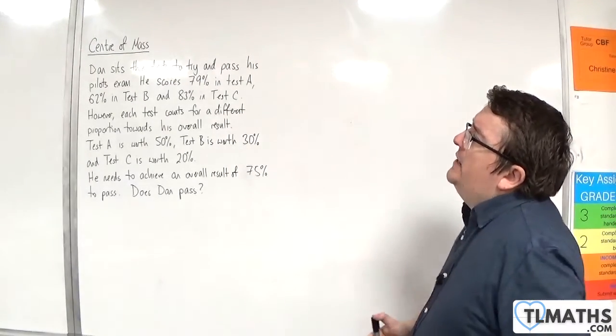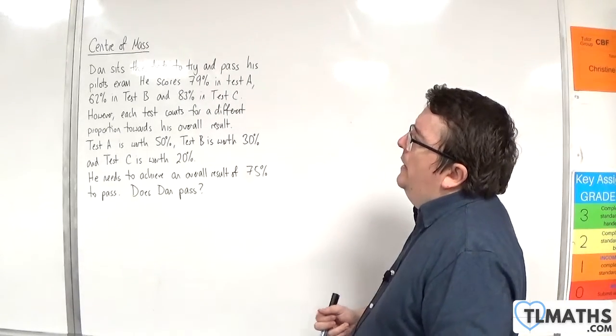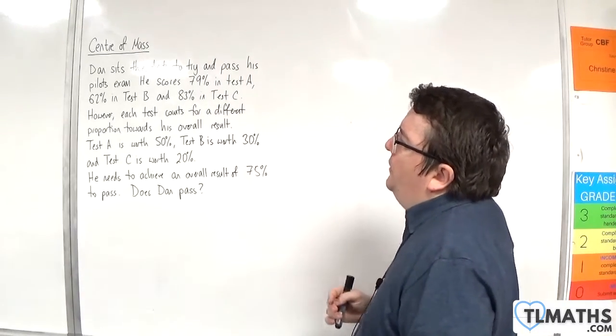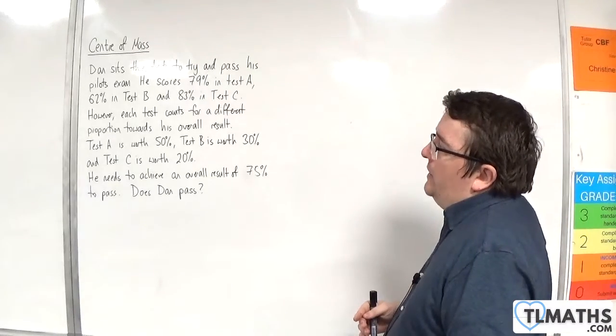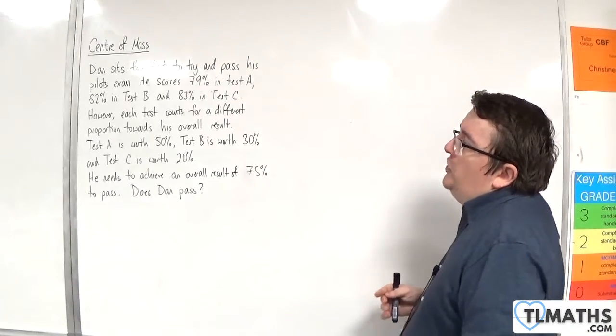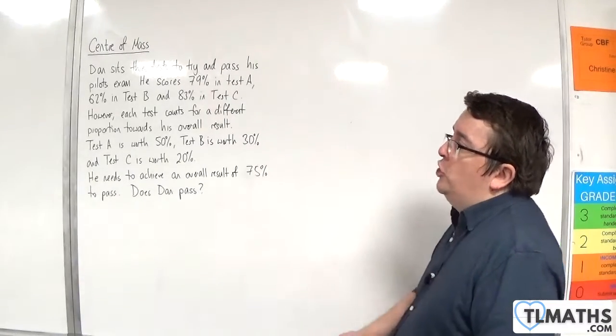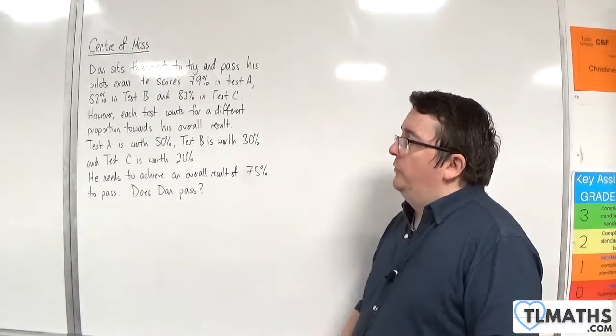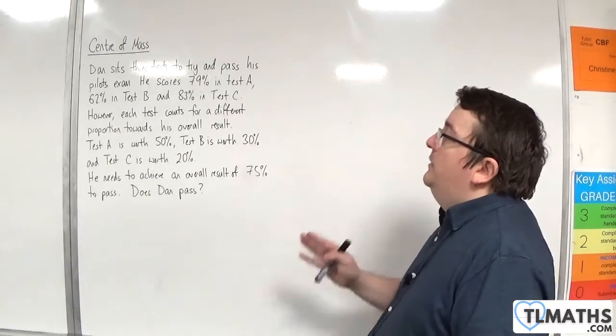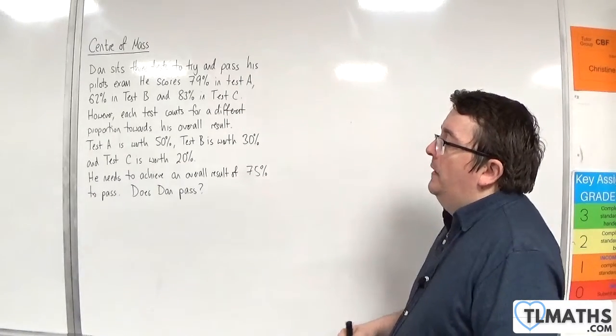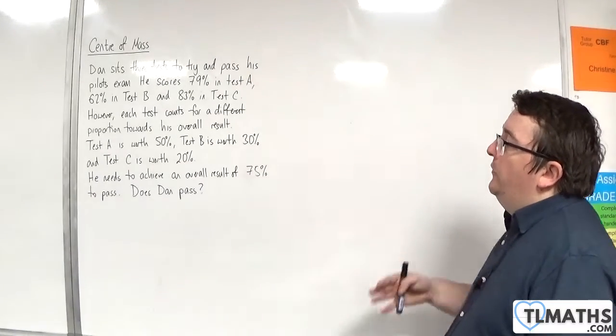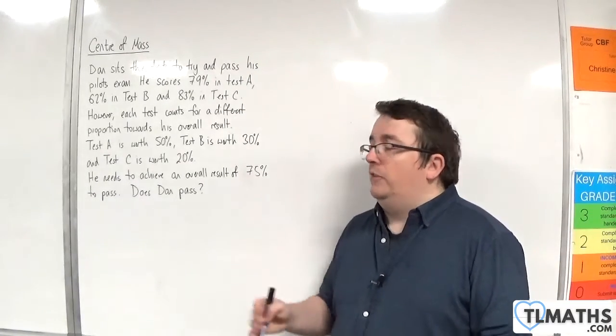Dan sits three tests to try and pass his pilot's exam. He scores 79% in test A, 62% in test B and 83% in test C. However each test counts for a different proportion towards his overall result. Test A is worth 50%, Test B is worth 30%, and test C is worth 20%. He needs to achieve an overall result of 75% to pass. Does Dan pass?